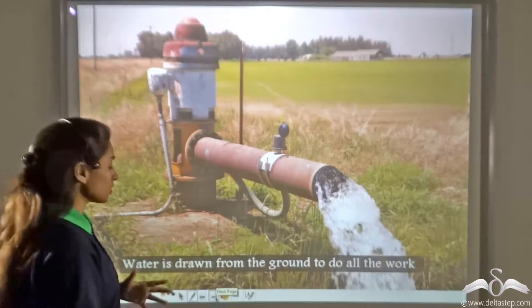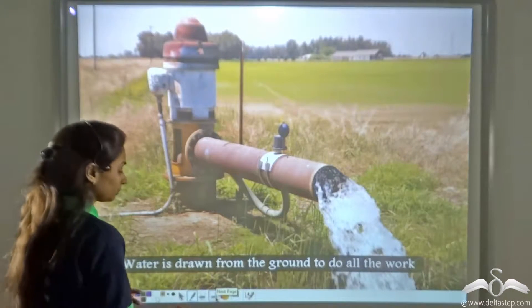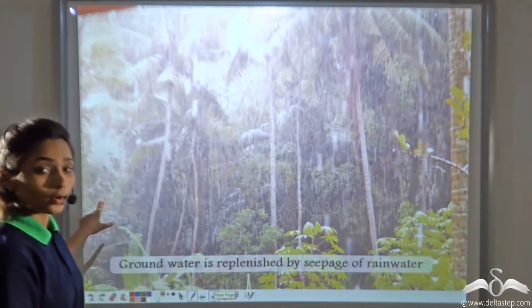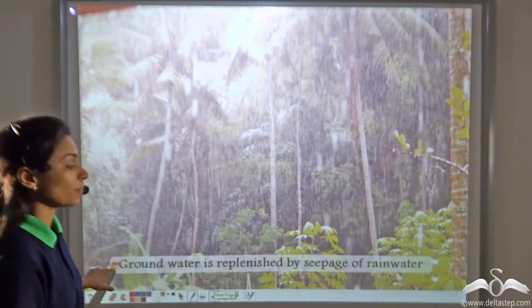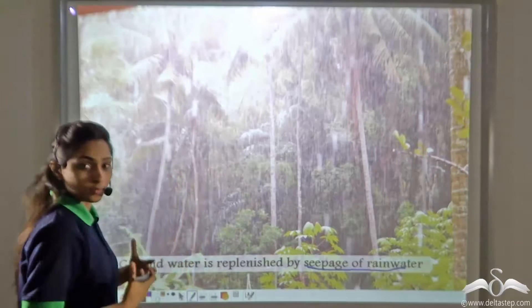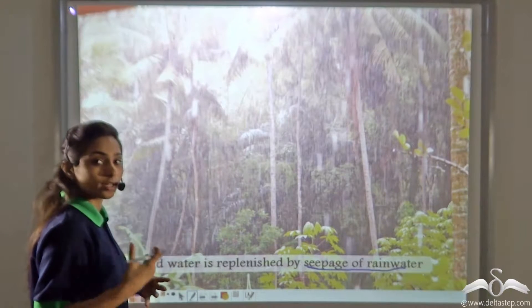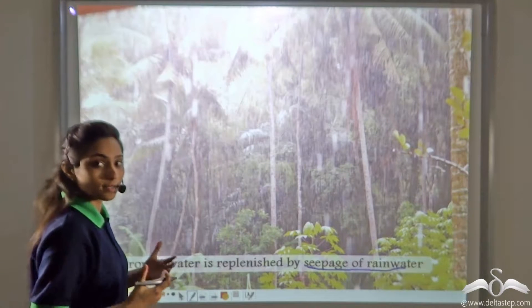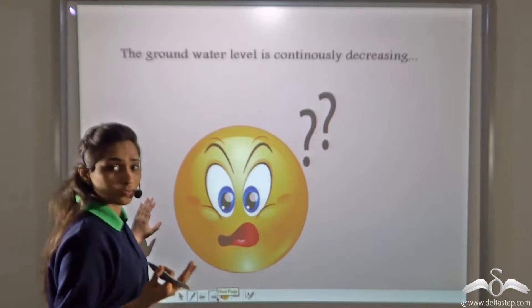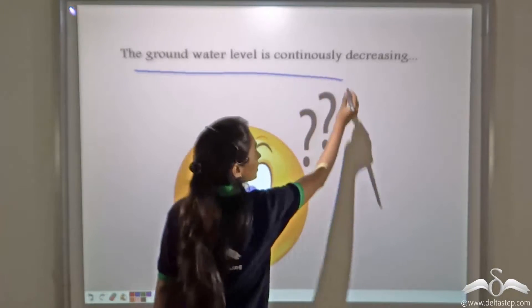Most of the water we use is actually drawn from the ground. This groundwater is replenished by the seepage of rainwater — rain water that comes down to the earth's surface seeps in, so that the groundwater level maintains a balance. But even after being replenished by rainwater, the groundwater level is continuously decreasing.